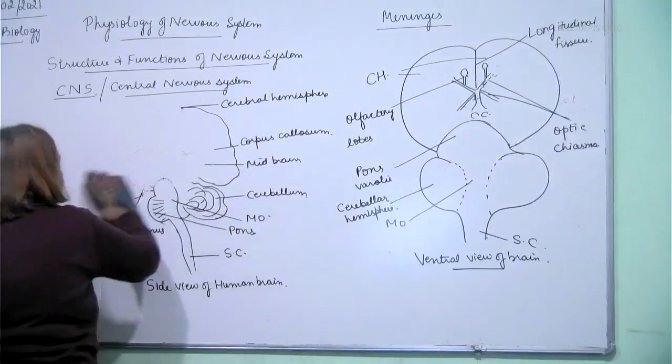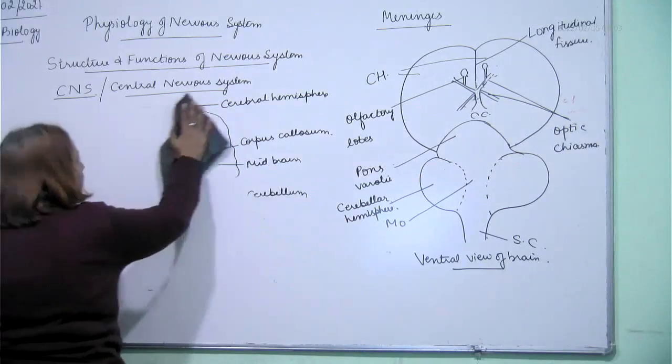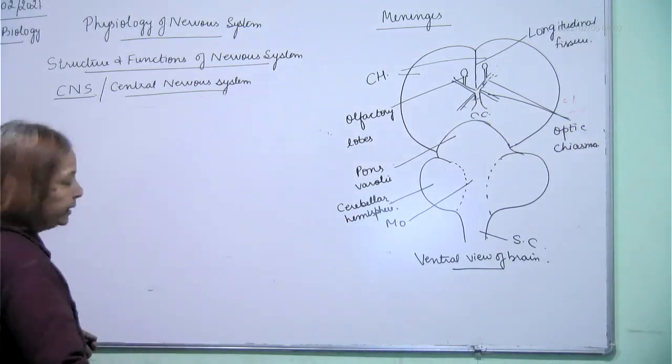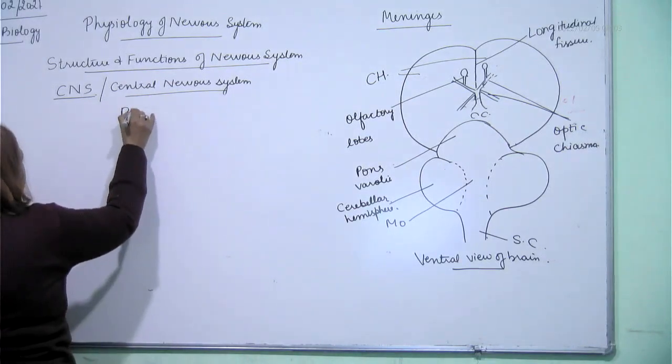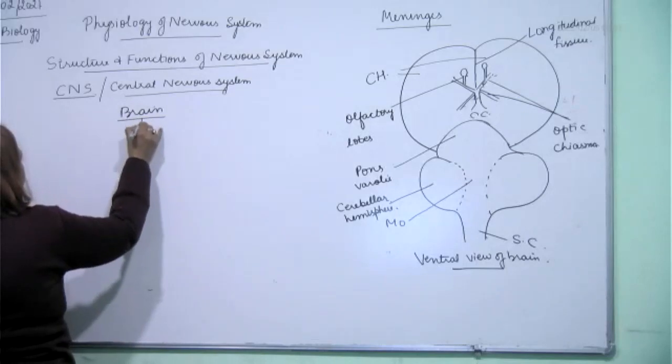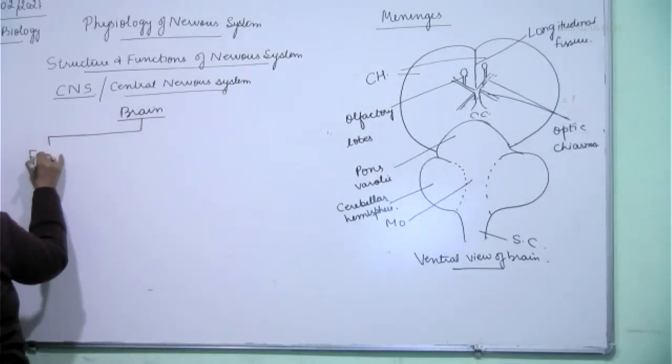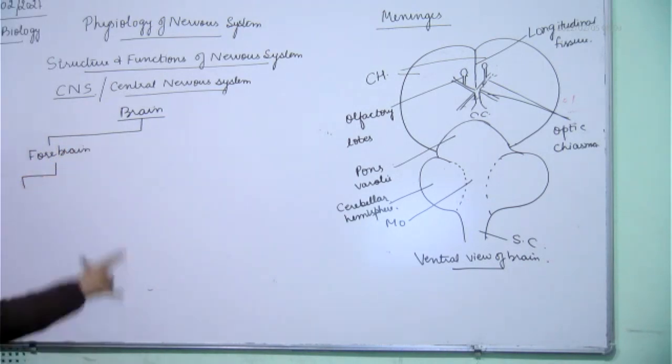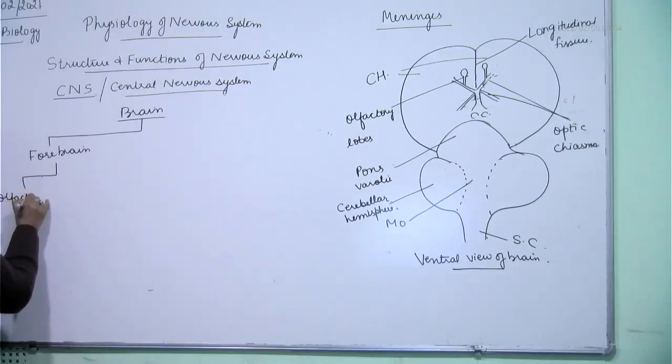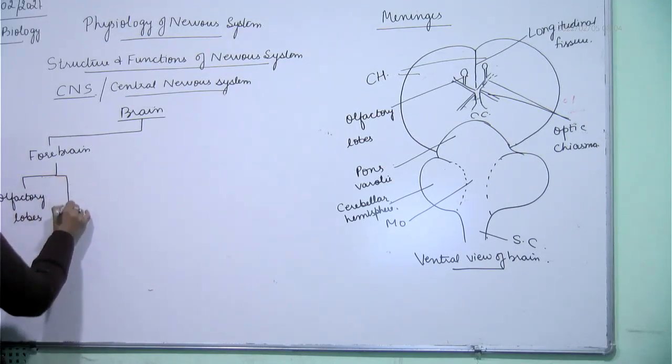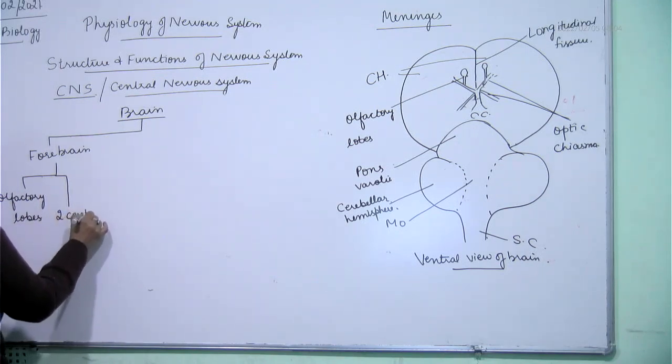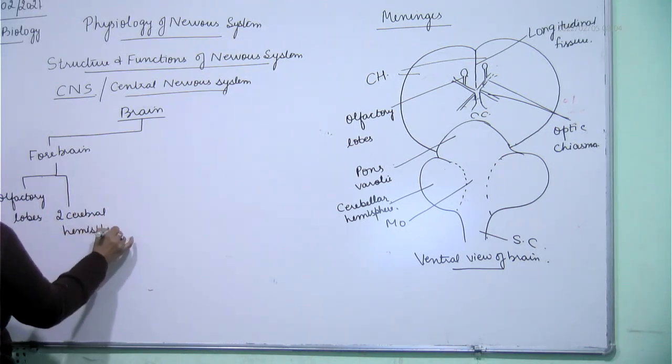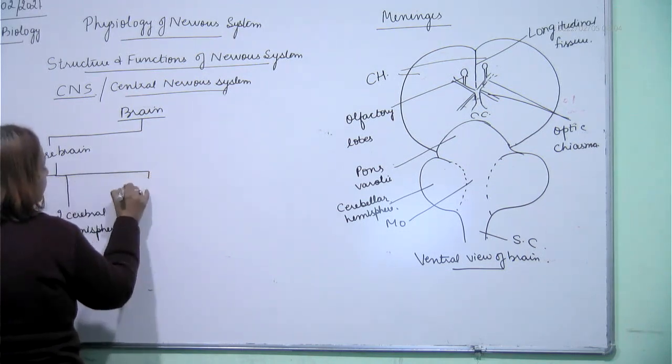So, if we do division, the brain has three parts. Forebrain. Forebrain has pair of olfactory lobes, two cerebral hemispheres, two olfactory lobe and a diencephalon.